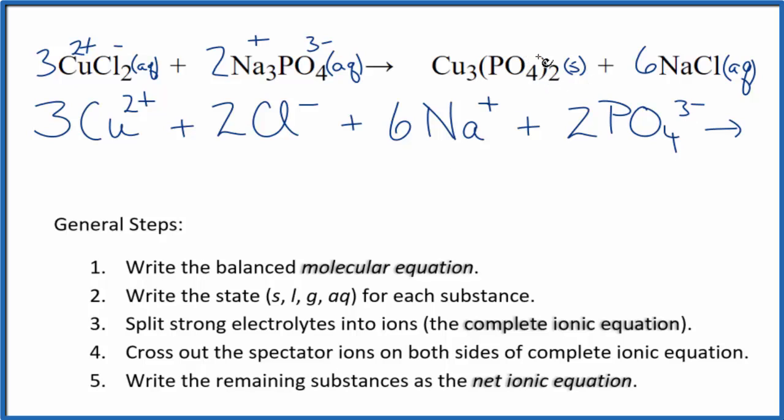For the products, with net ionic equations, we don't split solids apart. So we'll keep this whole copper 2 phosphate together. Then we have a plus and a minus. So we have 6 sodium ions, just like the reactants, plus 6 chloride ions, also like the reactants.